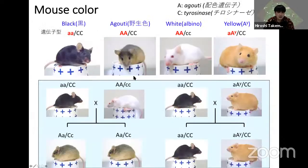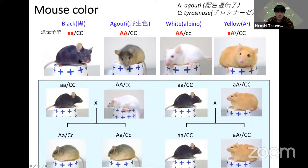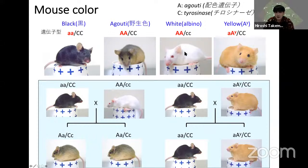This shows mice colors. Wild-type mice show brown hair. Black mice are a mutant. The genotype C/C refers to tyrosinase — so black and brown mice are wild-type for tyrosinase. The agouti gene (A) determines the rate of melanin synthesis. Albino mice are deficient in tyrosinase. In addition to these color types, we have yellow agouti mice.